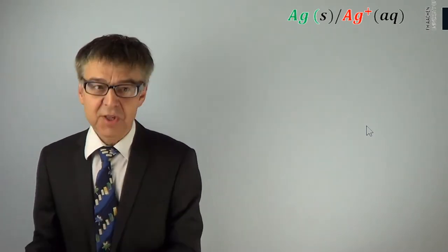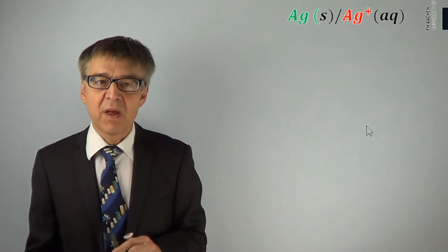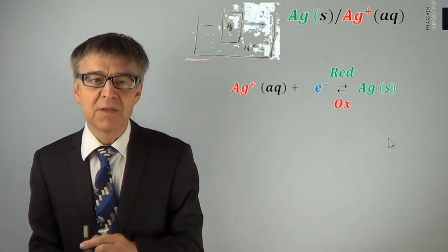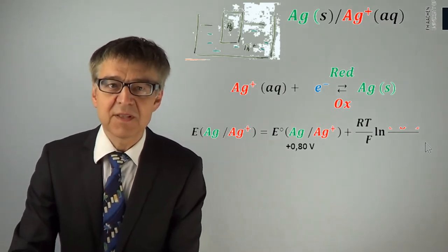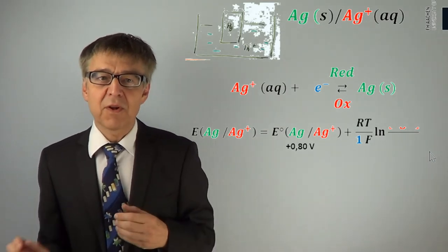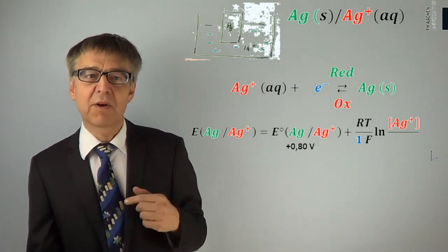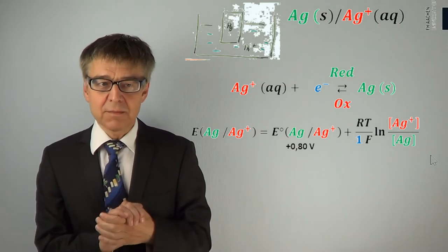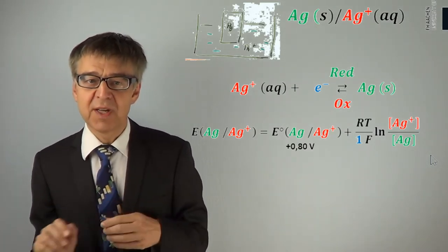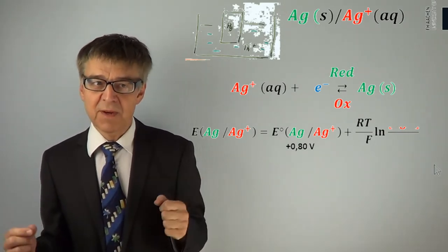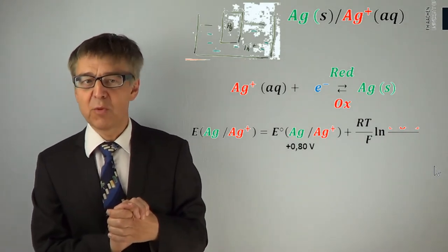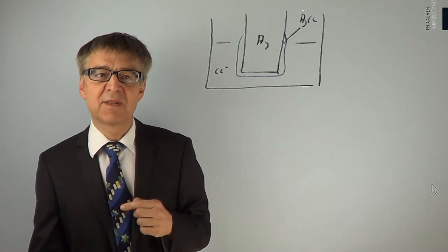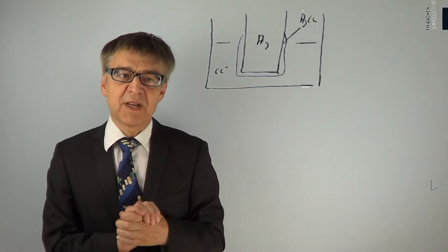A metal electrode is easy to build: just submerge a metal into the solution of its ions. The Nernst equation for a silver electrode is as follows. The electrochemical series gives 0.8 V for the standard reduction potential. One electron is involved in the transfer reaction. The argument of the logarithm is the concentration of Ag⁺ ions over the concentration of silver metal. Elemental silver is a solid; we have to use the mole fraction to specify its concentration. As we use pure silver, the mole fraction equals 1 and we may omit this concentration. Note that this simplification is not true for alloys.